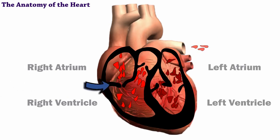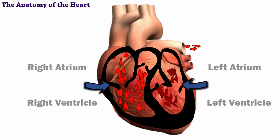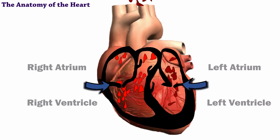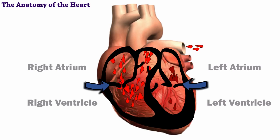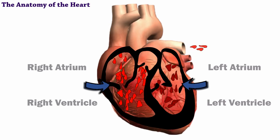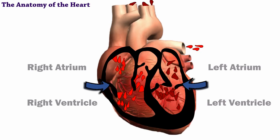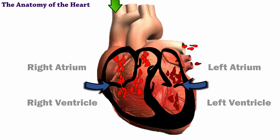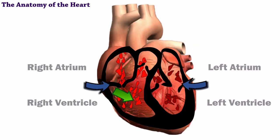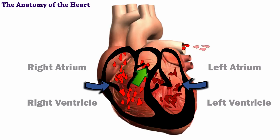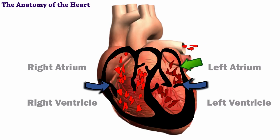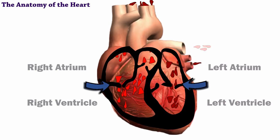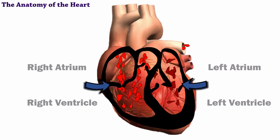Each chamber is separated by the cardiac muscle and valves. The valves effectively move blood throughout the heart by opening in only one direction. This forces the blood to pass through the chambers, into the lungs, and into your body without backing up or flowing backward.